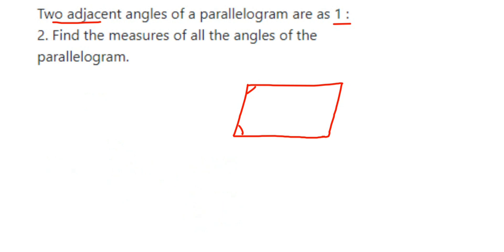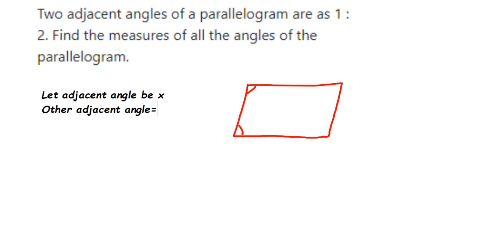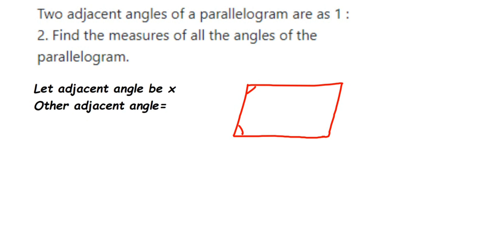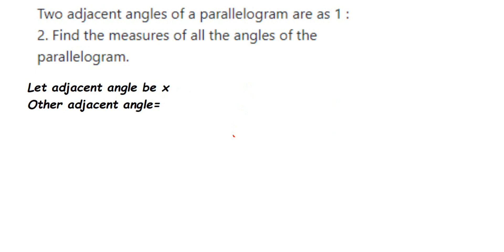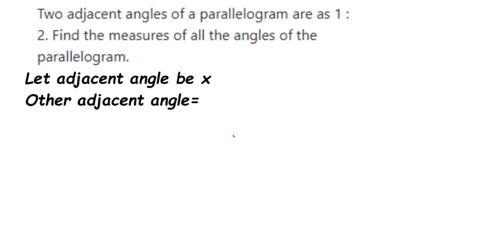Similarly here, they have given the ratio 1 is to 2, so there is a common factor — it could be 1, 3, 4, or any number. For that, I'm going to assume a variable X, because X is actually the common factor. This is why in many ratio-related questions we take X. So I'll take the first adjacent angle to be X, and the other adjacent angle will be 2X.